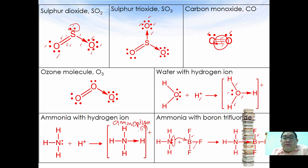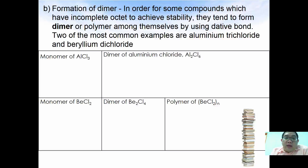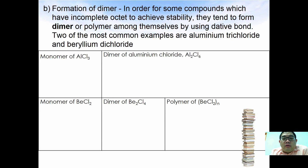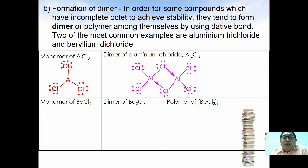The second application of dative bond is the formation of dimers. Some compounds with incomplete octets achieve stability by forming dimers or even polymers using dative bonds. Two common examples are aluminium trichloride and beryllium dichloride. Aluminium chloride as a monomer has an incomplete octet, but naturally it exists as Al2Cl6 in solid form.